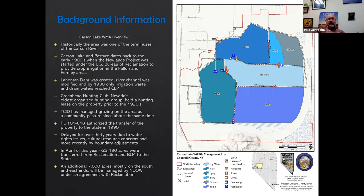The Greenhead Hunting Club, Nevada's oldest organized hunting group, has held a hunting lease on this property prior to the 1920s. The Truckee Carson Irrigation District has managed grazing on this area as a community pasture since about that same time. Back in 1990, the Secretary of the Interior authorized Public Law 101-618, which transferred the property from federal ownership to the state.